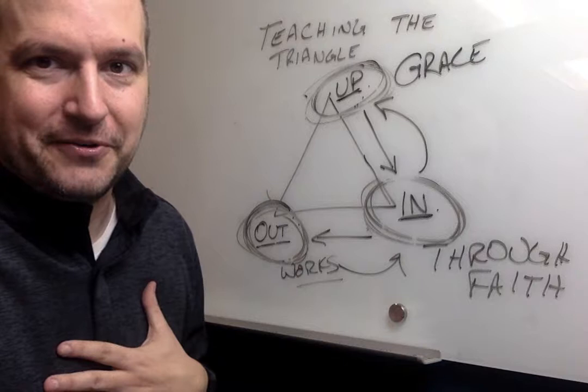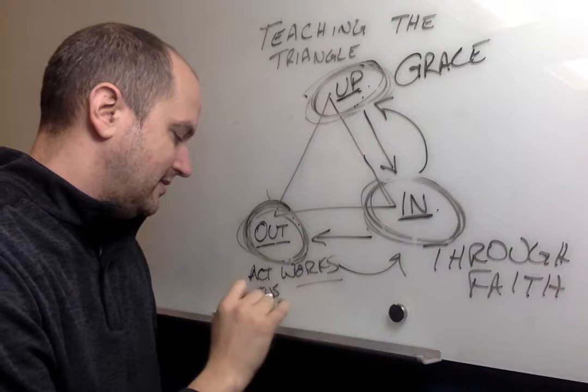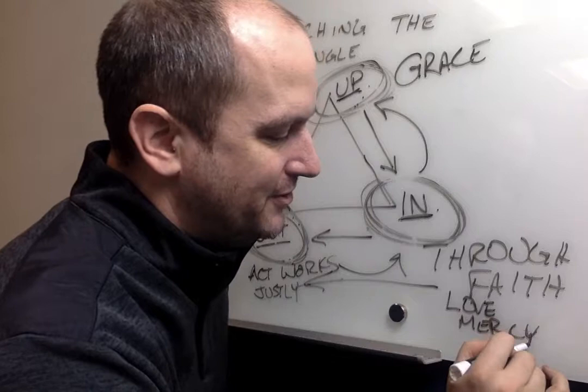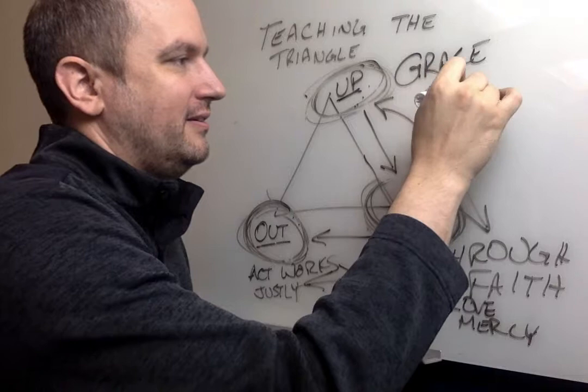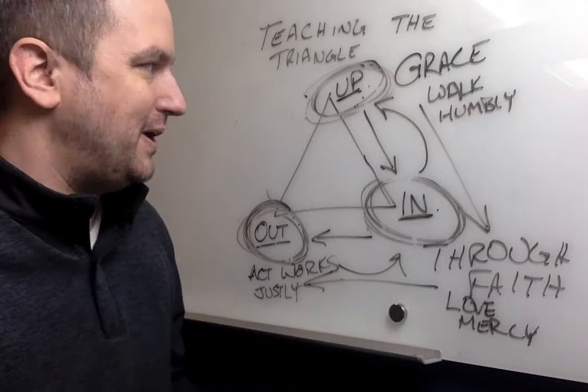You might say Micah 6:8, my favorite verse, although I'm only 6'7", so I always wanted to grow another inch and I could be Micah 6:8. But what does the Lord require of you, man? It says to act justly. Well, how am I going to act justly? Well, to do that, I need to love mercy. Well, what's going to make me love mercy? Well, to walk humbly with your God. And what happens is you start seeing this structure again and again and again.